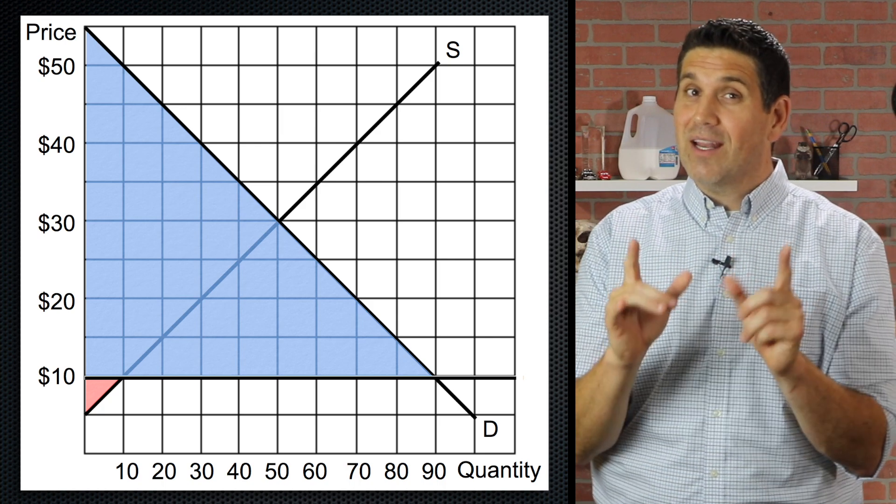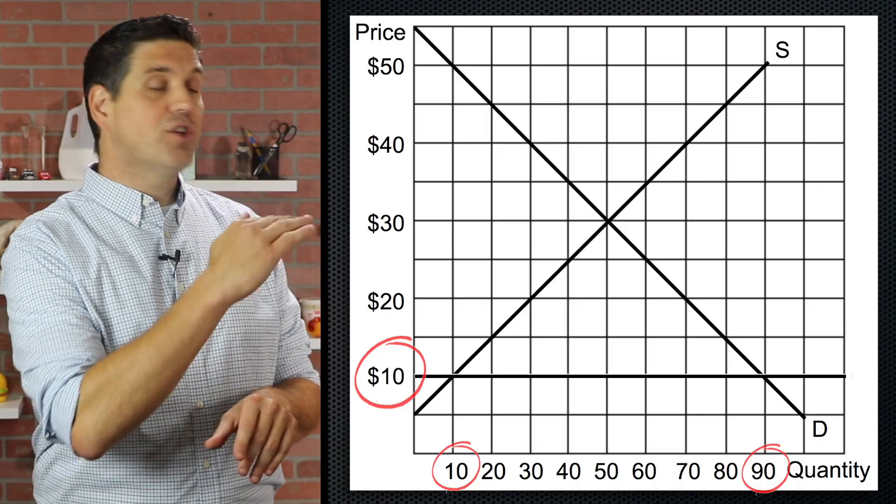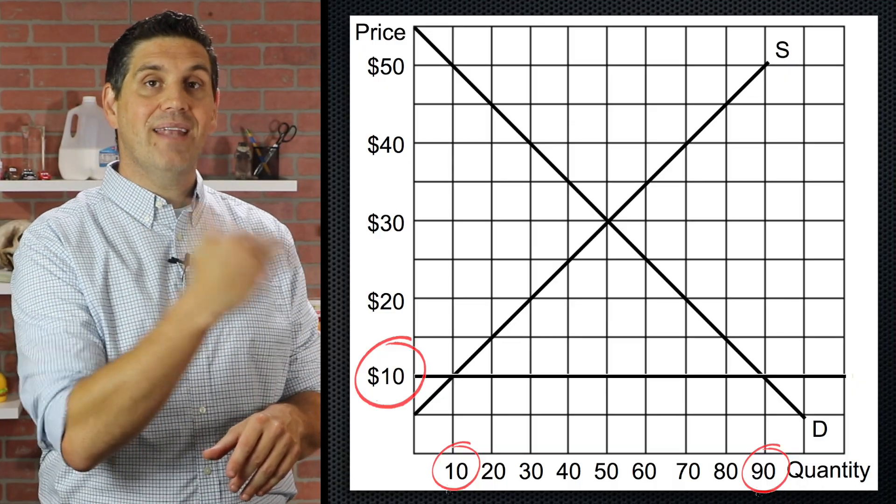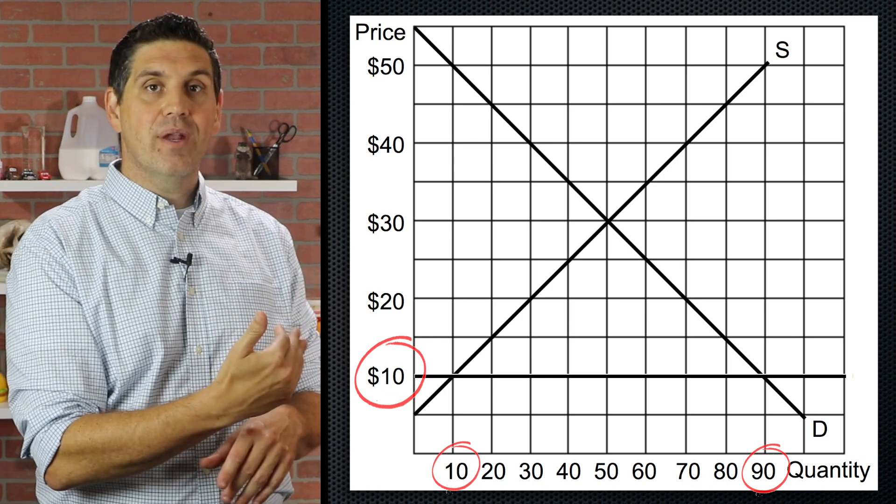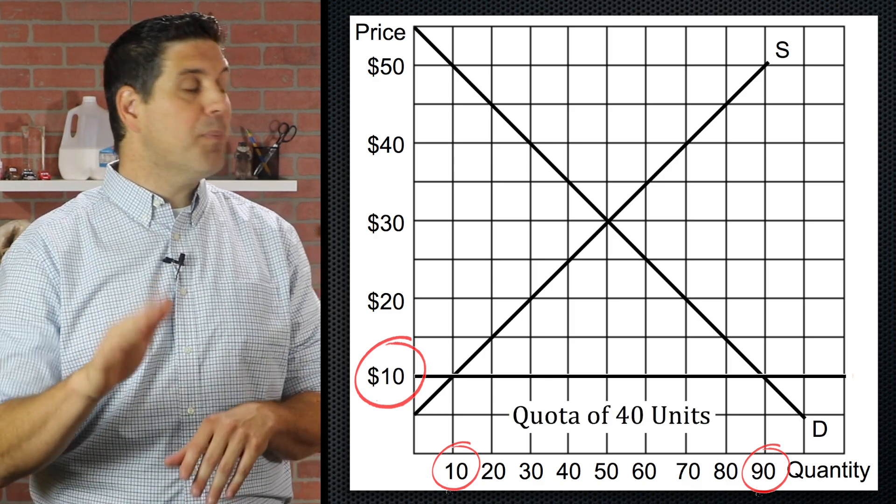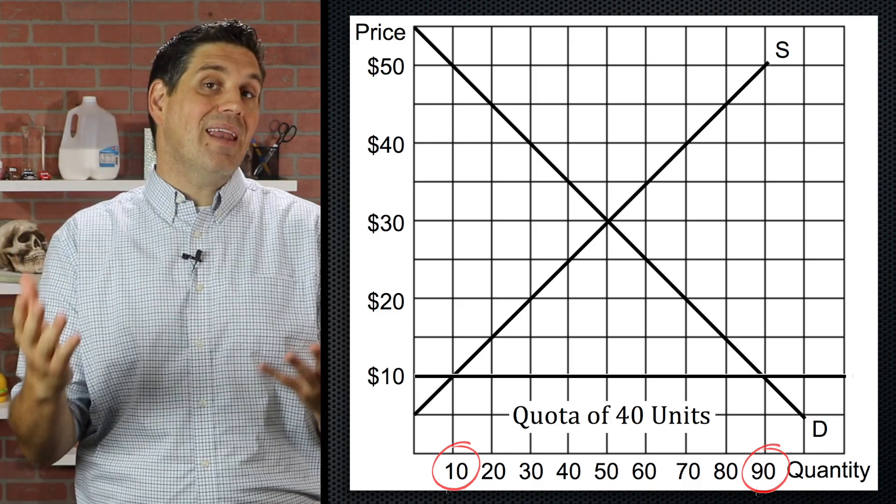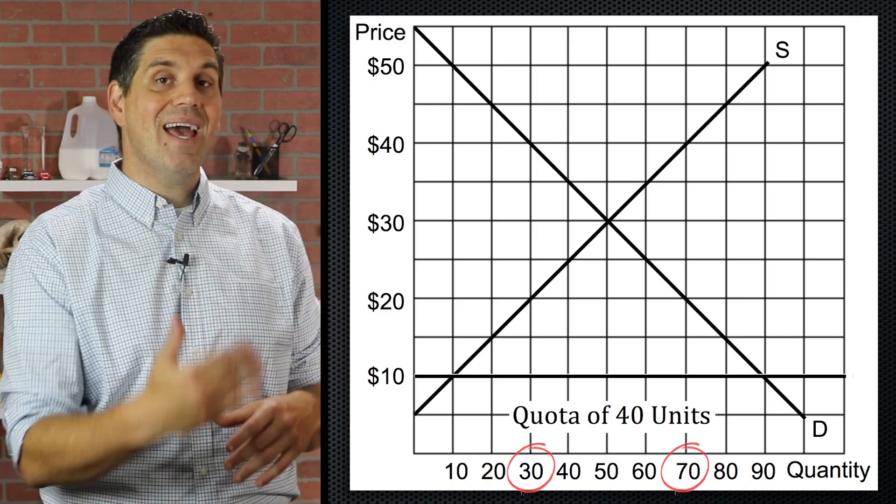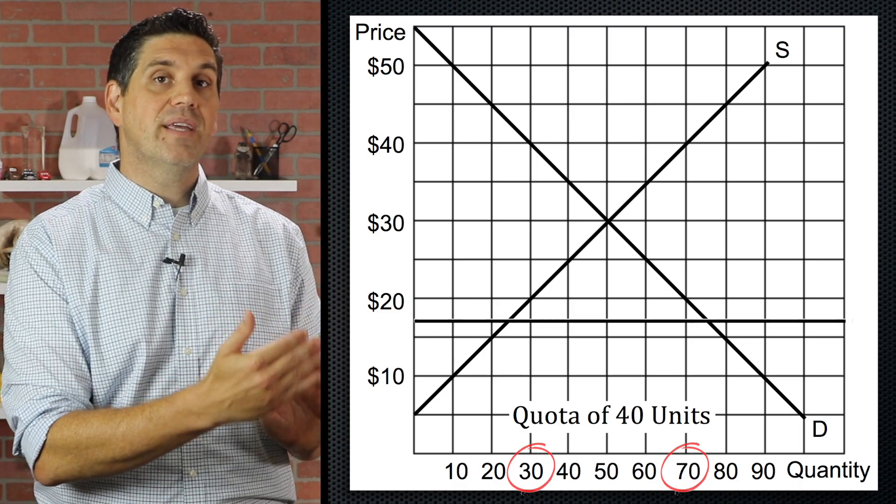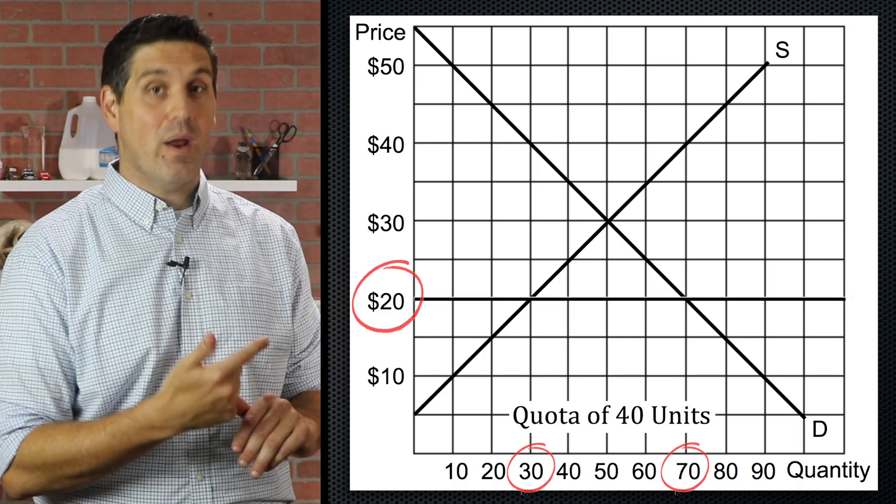International trade is good and it mostly benefits consumers. But what happens on the graph when the government gets involved, when there's quotas and tariffs? Assume we're buying things at a world price at $10 and we're importing 80 units. The government comes and says, listen, we're going to put a quota. You can't bring in more than 40 units into the country. So we can't import 80 units anymore. So instead we only do 40 units. The result is a price that's right here at $20.